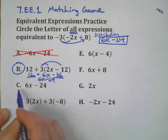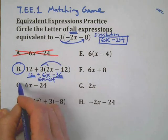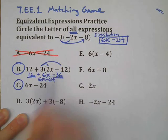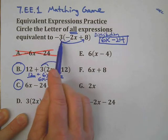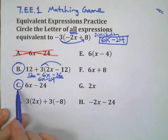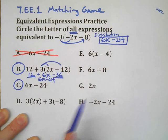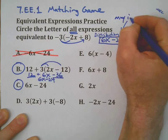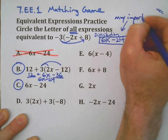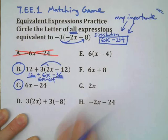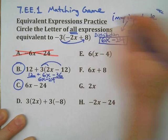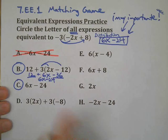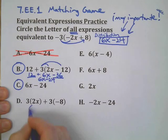Choice C is obviously a match — I sure hope you caught that one, we don't have to do anything there. The thing is, if you completed this part of the problem wrong, you probably would not pick C. So this step is very critical.